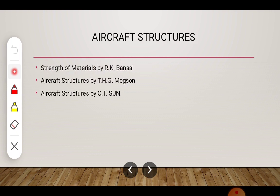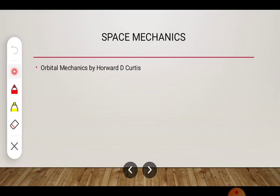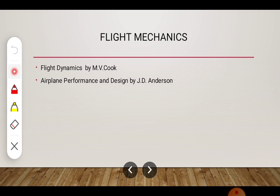For aircraft structures, the recommended books are 'Strength of Materials' by R.K. Bansal, 'Aircraft Structures' by Mekson, and 'Aircraft Structures' by C.T. Sun. In the case of space mechanics, the textbook is 'Orbital Mechanics' by Howard D. Curtis. For flight mechanics, the textbooks are 'Flight Dynamics' by M.V. Cook and 'Aircraft Performance and Design' by J.D. Anderson.